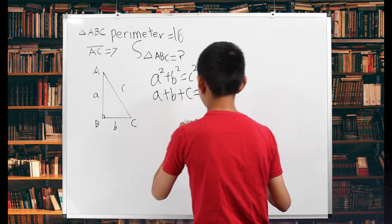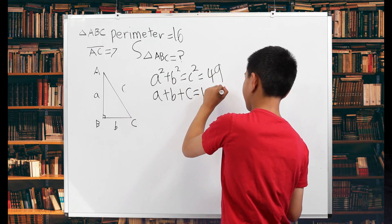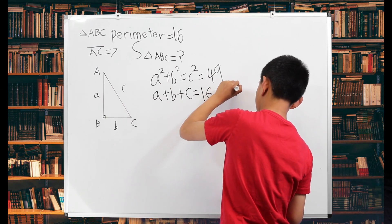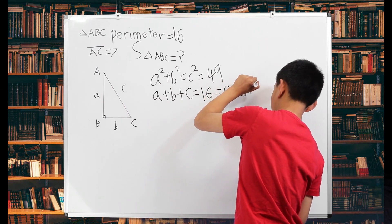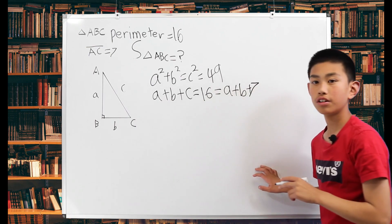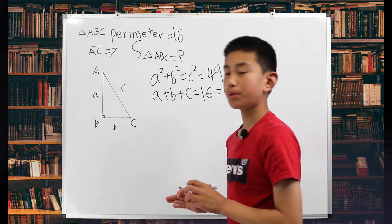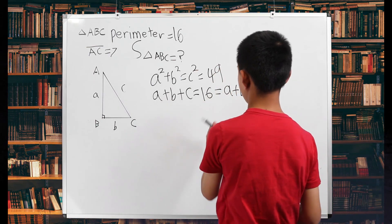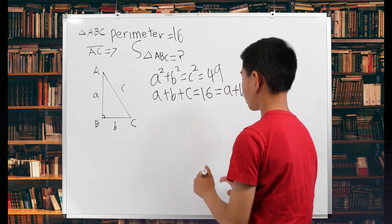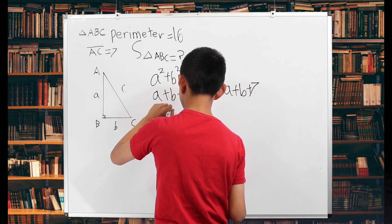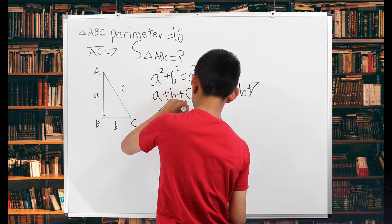we can write something else. Since we know that C is 7, A plus B plus 7 is 16. So we can subtract 7 from this side and 7 from here, which leaves us with A plus B is 9.